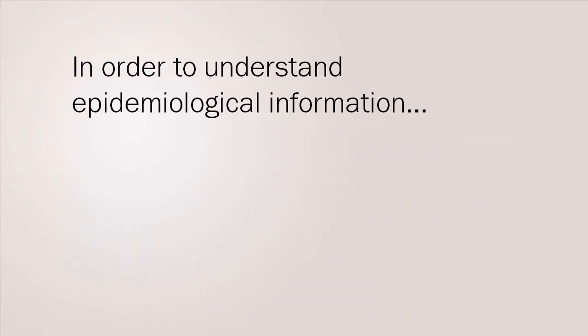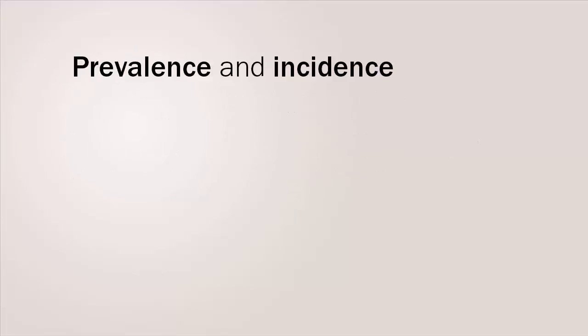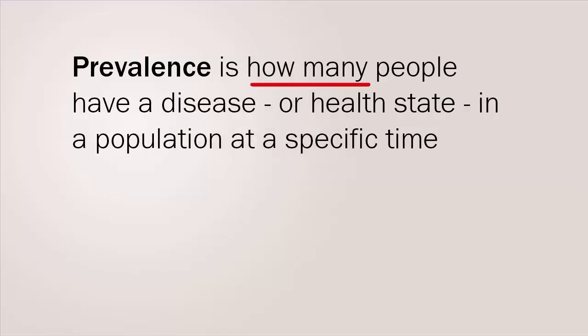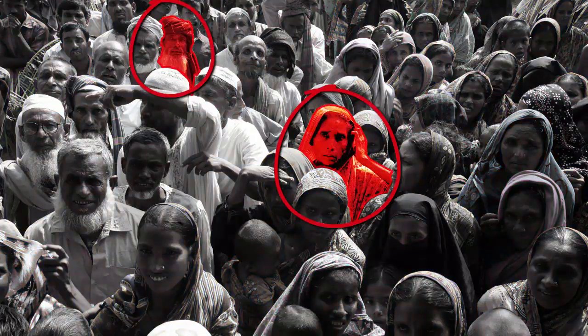In order to understand epidemiological information, you need to be familiar with some commonly used terminology, such as prevalence and incidence. Prevalence is a measure of how many people have a disease or a health state in a given population at a specific time. A good analogy for this is a photograph of the population, showing how many people in the photograph have a disease.